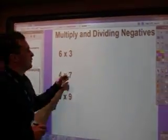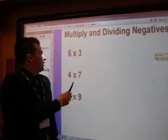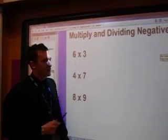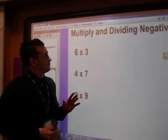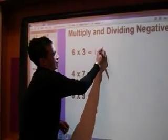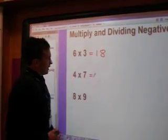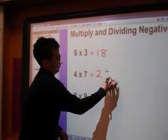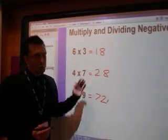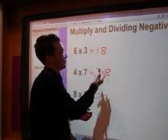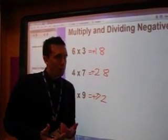Right, we'll start with multiplying two positive numbers together. So we've got a positive six times positive three. We know they're positive because there's no sign in front of them. So these ones are the sort of things you may have seen at primary school. Four times seven. And eight times nine. And your answer is always going to be positive. And again, we don't need to write a plus in front because we know it's positive.